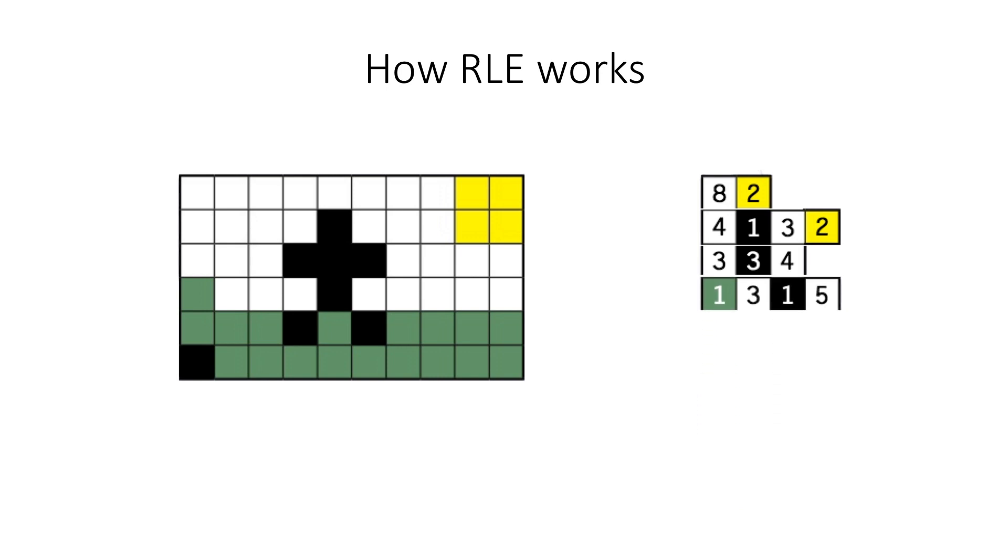And the next one is one green, three white, one black, and five white. Then the next scan line is three green, one black, one green, one black, and four green. And the last line has only one black in the beginning and then nine green pixels. So this is how this image actually looks if you code it in that order.